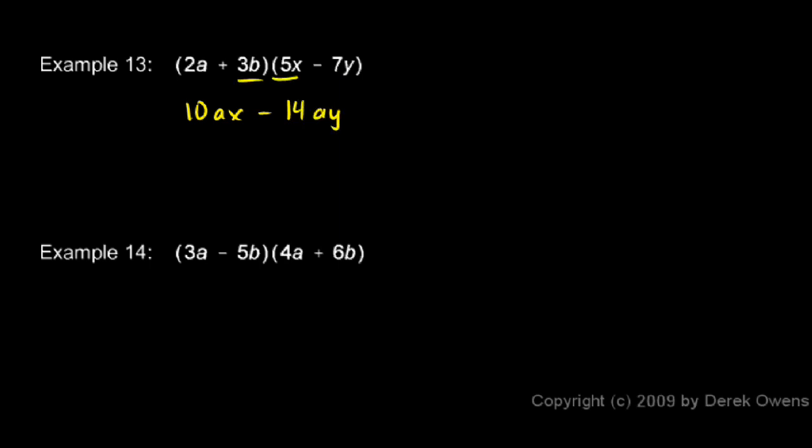Then the inner terms, 3b and 5x, those multiply together to give us positive 15bx. And then the last terms, 3b and negative 7y, multiply to give us negative 21by. And that's the answer.